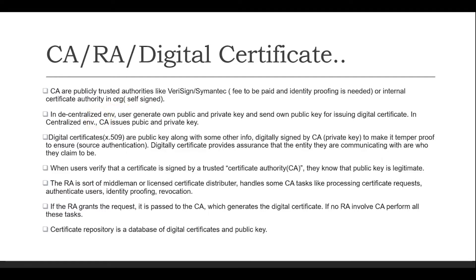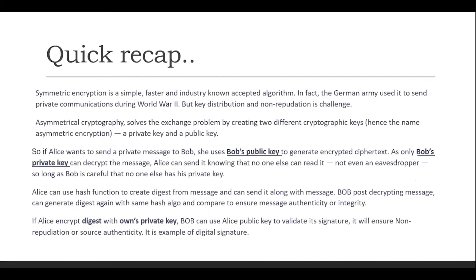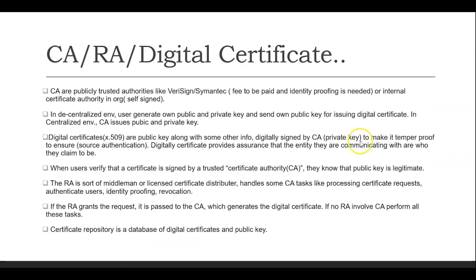In a decentralized environment, the user generates their own public-private key pair and sends the public key for issuing the digital certificate — only the public key is required for certificate issuance. In a centralized environment, the CA issues both the public and private key. The digital certificate, also known as the X.509 certificate, is the international standard used for digital certificates. It contains the public key and other important information, and is finally signed by the CA, making it tamper-proof and assuring that the one you are communicating with is the true entity.